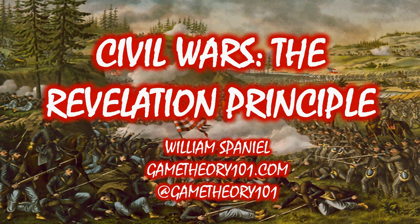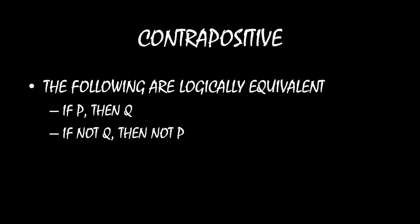What is a contrapositive? Well, contraposition tells us that the following two statements are logically equivalent: if P, then Q is the exact same thing as saying if not Q, then not P. We call that second statement the contrapositive of the first statement. So if one of those things is true, then the other one is true as well. This is important for the Revelation Principle, because you might recall that the Revelation Principle itself is an if-then statement. And so we know that the Revelation Principle is true, which means the contrapositive of the statement is going to be true as well.